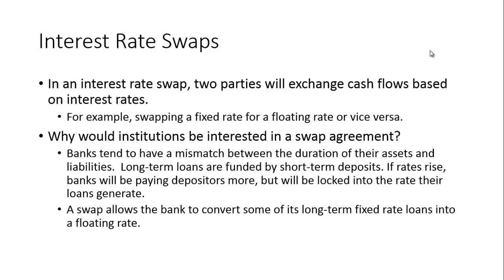Why would institutions be interested in a swap agreement? Banks tend to have a mismatch between the duration of their assets and their liabilities — long-term loans are funded by short-term deposits. If rates rise, banks will be paying depositors more but will be locked into the rate that their loans generate. A swap allows the bank to convert some of its long-term fixed rate loans into a floating rate, thus reducing some of the interest rate risk.